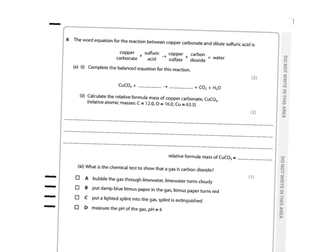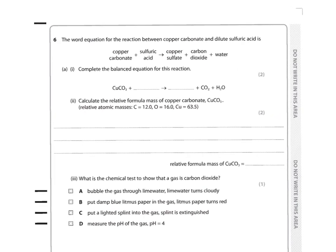Now we're getting to the trickier questions at the end of the paper. The word equation for the reaction between copper carbonate and sulfuric acid is: copper carbonate + sulfuric acid → copper sulfate + carbon dioxide + water. Complete the balanced equation — you need the formulas for sulfuric acid (H₂SO₄) and copper sulfate (CuSO₄).